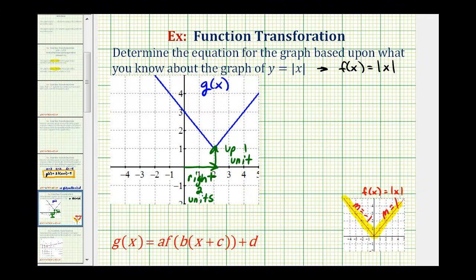Next, because our graph has been shifted right and up, we need to recognize that we only need to find the value of c, which is affected by the shift right two units, and the value of d, which is affected by the shift up one unit. So we can write g of x in the form of f of the quantity x plus c plus d.